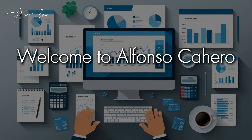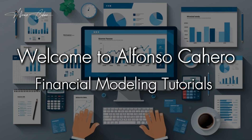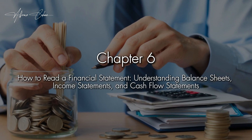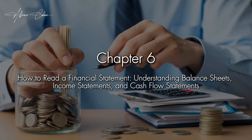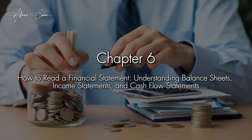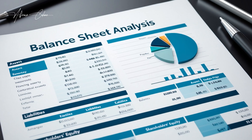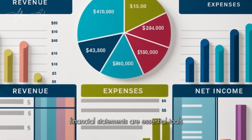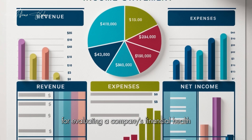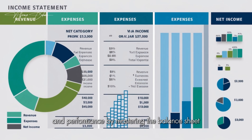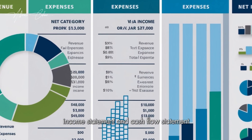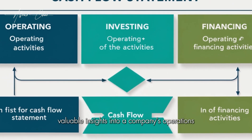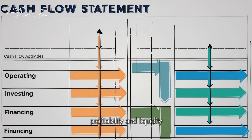Welcome to Alfonso Cajero Financial Modeling Tutorials, Chapter 6: How to Read a Financial Statement, understanding Balance Sheets, Income Statements, and Cash Flow Statements. Financial statements are essential tools for evaluating a company's financial health and performance. By mastering these three statements, you can gain valuable insights into a company's operations, profitability, and liquidity.